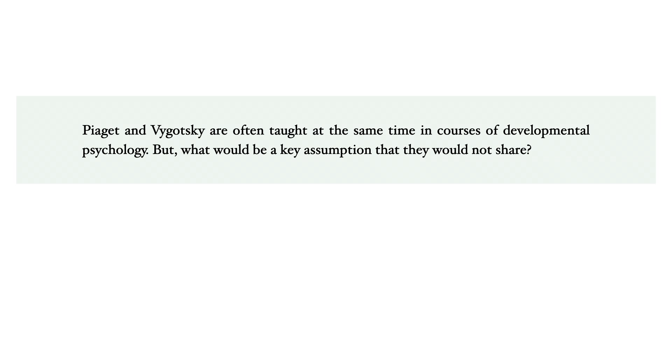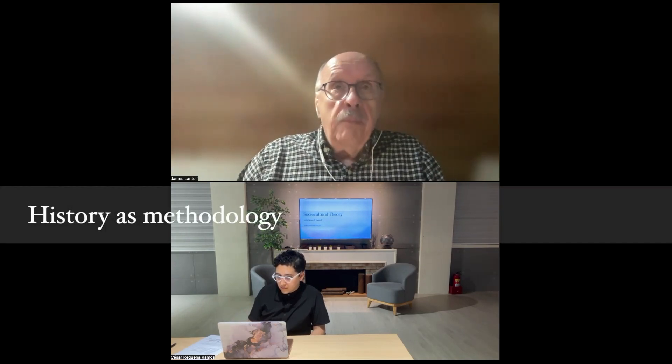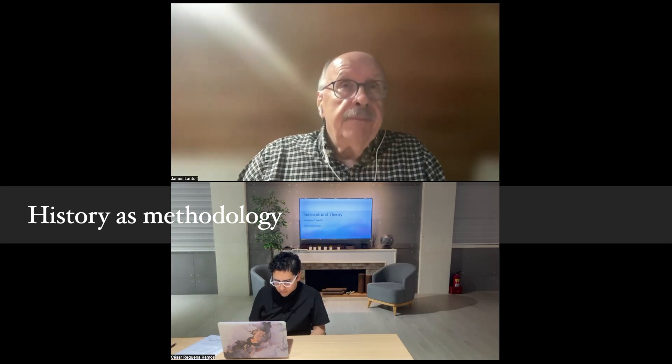Piaget and Vygotsky are often taught at the same time in courses of developmental psychology. But what would be a key assumption that they would not share? First of all, Vygotsky is not a developmental psychologist as Piaget was. Vygotsky was a psychologist that used development as his methodology — what he called history, both history backward and history forward. The idea was that if you want to understand the complexities of human thinking, you had to go back in time to the beginnings of the process and trace its development over time.